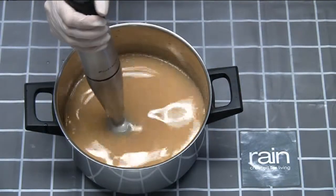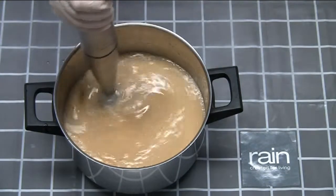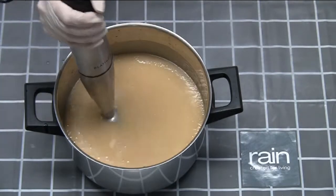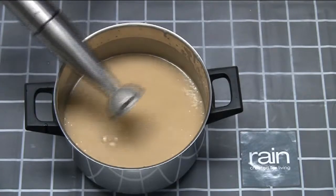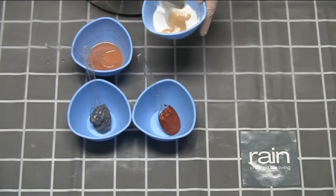Using your stick blender, bring the soap to a light trace. A trace looks as though snails have been walking over your batter. You don't want a thick, heavy trace. You want to buy yourself some time to get this technique right. And so you want a very early, very light trace.